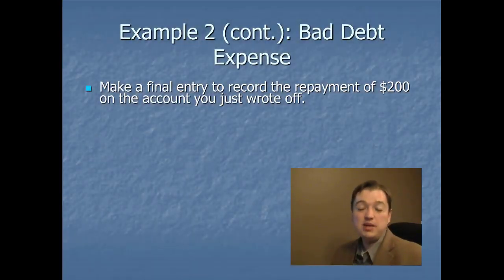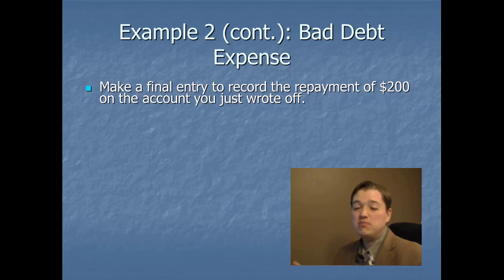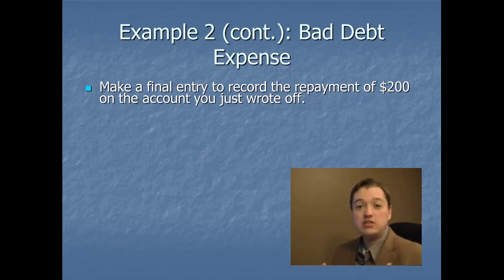The last possibility is somebody comes to us and says, hey, you wrote off our account, we owed you a bunch of money, we went to bankruptcy protection, but we're coming out of protection now. And we'd like to settle our debt with you, because we want to keep doing business. Well, the rule is here, we set aside money in that allowance for bad debt account for people to rip us off. If somebody decides not to rip us off, then we have to put that money back so somebody else can rip us off. So we have to put whatever they're going to pay back into the allowance for bad debt.